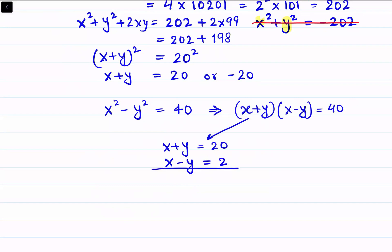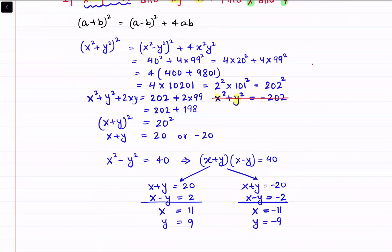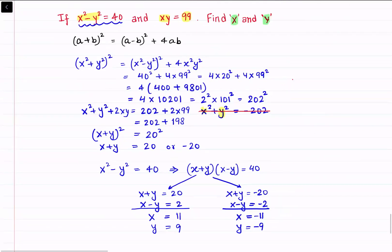Solving that system gives us x = 11 and y = 9. Now putting the value x + y = negative 20, we get x - y = negative 2. Solving that system gives x = negative 11 and y = negative 9. So we are getting two sets of answers: x = 11 and y = 9, or x = minus 11 and y = minus 9. And that's our answer.